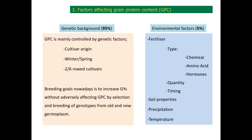Environmental factors account for only 5% of the protein content in the grain. Some of these factors can be affected by humans, and these include the type, quantity, or timing of applying fertilizers, soil properties, precipitation or irrigation, atmospheric temperature, etc. Wheat and barley react similarly to genetic and environmental factors as well as their interactions, and that's why in both cereals it is quite difficult to keep a steady concentration of protein in the grain.